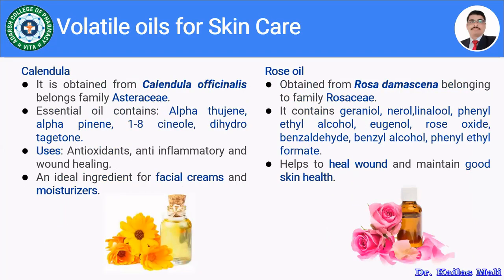Let us see certain volatile oils used in skin care. The very first one is calendula. Calendula oil is obtained from Calendula officinalis belonging to family Asteraceae. It mainly contains essential oils: alpha-thujene, alpha-pinene, 1,8-cineol and dihydrotagetone. It is used as an antioxidant, anti-inflammatory and wound healing agent. It is an ideal ingredient for facial cream and moisturizer and is used in various skin cosmetics.